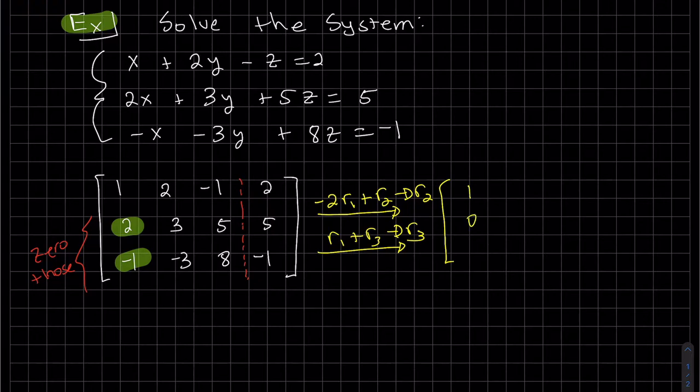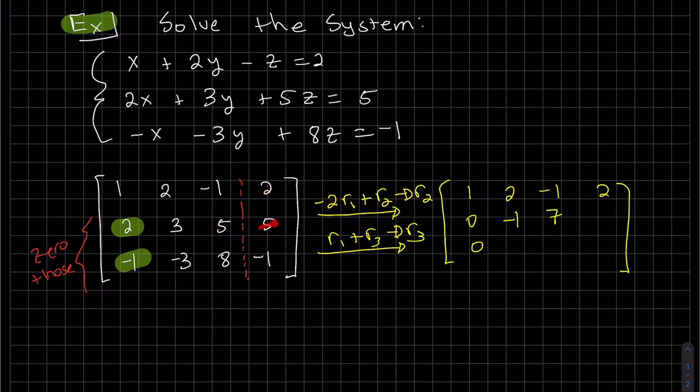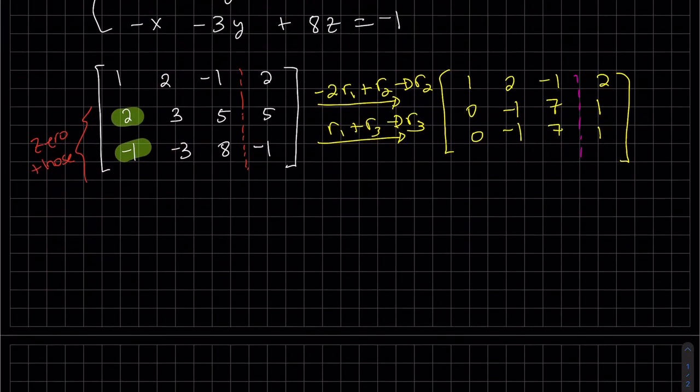I would always double check your equation and always write your equation so you can communicate what you're doing, especially in case you make a mistake. We're changing row two and row three, so I can just copy row one. Then we'll go to this one, positive two plus five, seven.